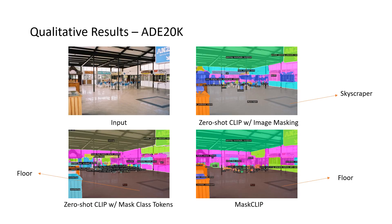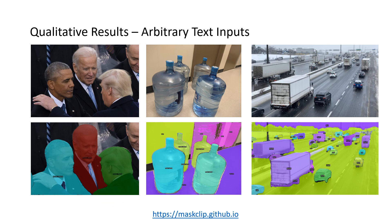Let's see some qualitative results. The input image is an indoor scene. The zero-shot CLIP with the image masking method actually predicts the floor as a skyscraper, while using the mask class token, this problem doesn't exist. The wrong prediction is understandable if you only look at the floor region — that's what the image masking method does, and it loses the global context information. Our method, since the mask class token still attends the class token which is a global image feature, retains the global context information. For more results and details of our paper, please visit our website. Thanks for watching.